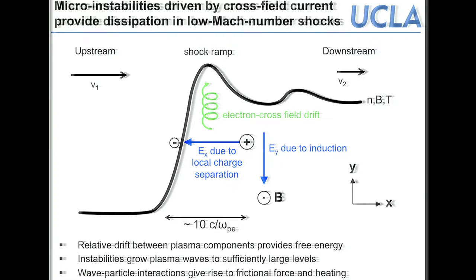The incoming plasma leads to charge separation: unmagnetized ions keep going while electrons are retarded. This horizontal electric field leads to an E×B drift of the magnetized electrons along the shock normal. It is exactly this relative drift between the electrons and the ions that provides the free energy for instabilities to grow and provide dissipation. Density, magnetic field, and temperature gradients can also lead to additional cross-field currents and dissipation.